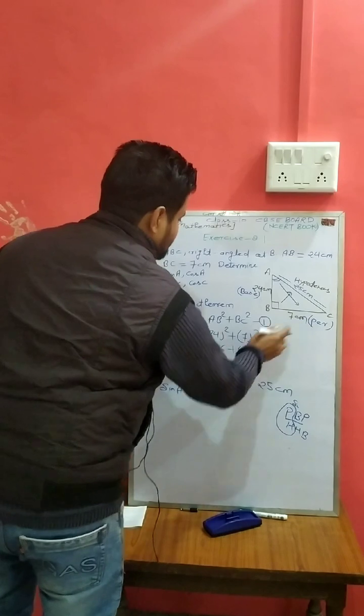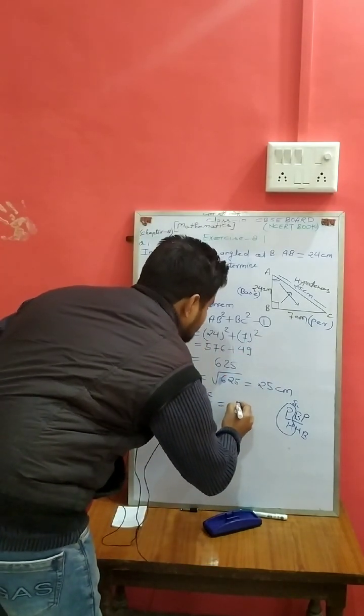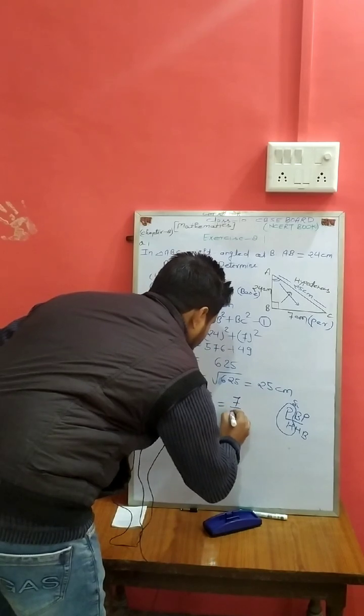When we have sin A, perpendicular upon hypotenuse. Sin A equals BC perpendicular upon hypotenuse AC, which is 7 upon 25.